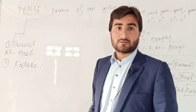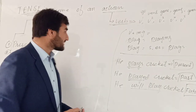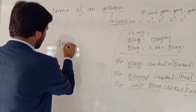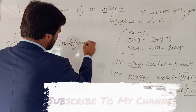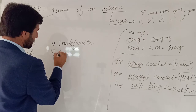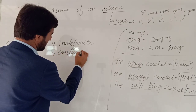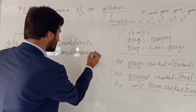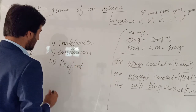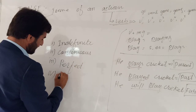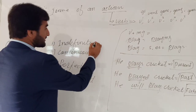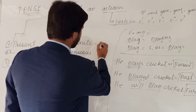Each of these three tenses equals four sub-types, giving us twelve tenses in total. The first sub-type is simple or indefinite, the second part is continuous, the third part is perfect, and the fourth part is perfect continuous.